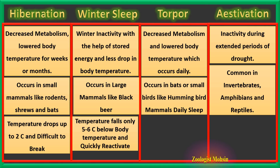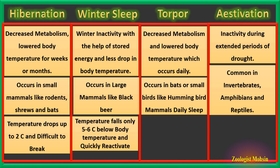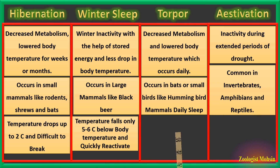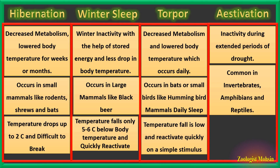In winter sleep, temperature falls only 5 to 6 degrees Celsius below normal body temperature. In the black bear, normal temperature is 37°C and it decreases only to about 31 or 32°C during winter sleep. The organism can quickly reactivate its metabolism — which is why a disturbed bear can attack you.